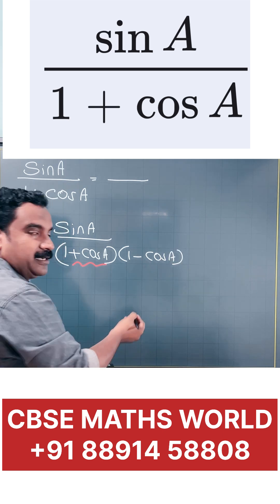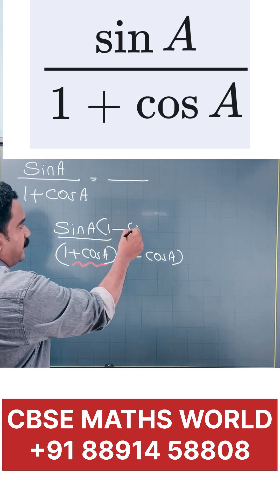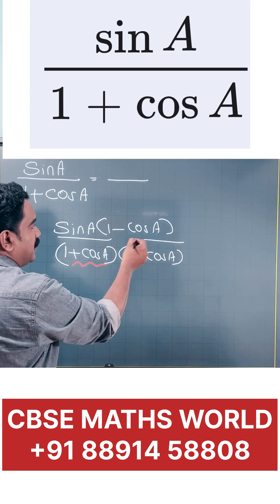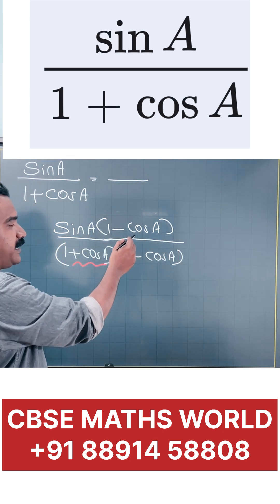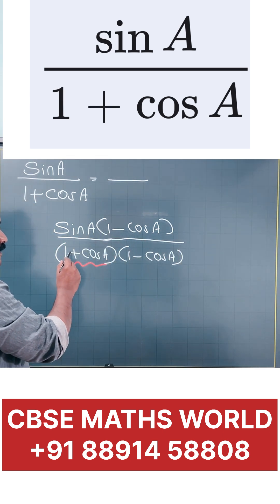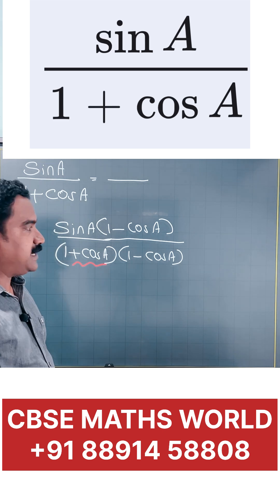So, if you multiply with the denominator, you want to multiply the numerator also. So, now the numerator is sine A into 1 minus cos A. Denominator is 1 plus cos A into 1 minus cos A.